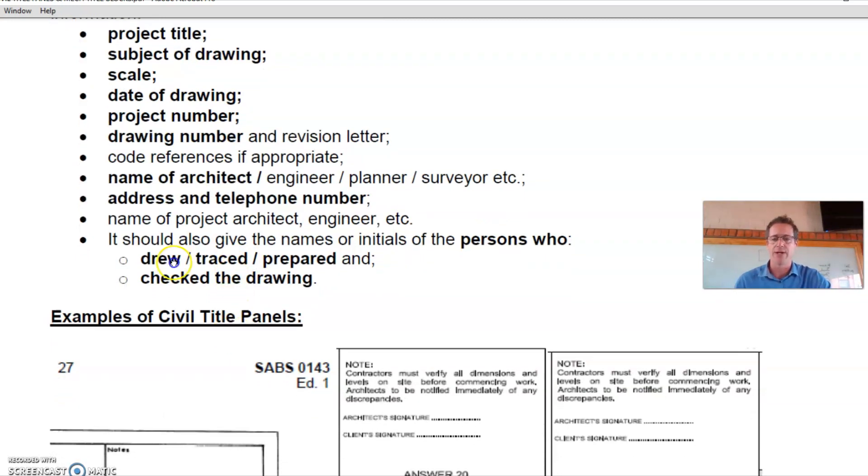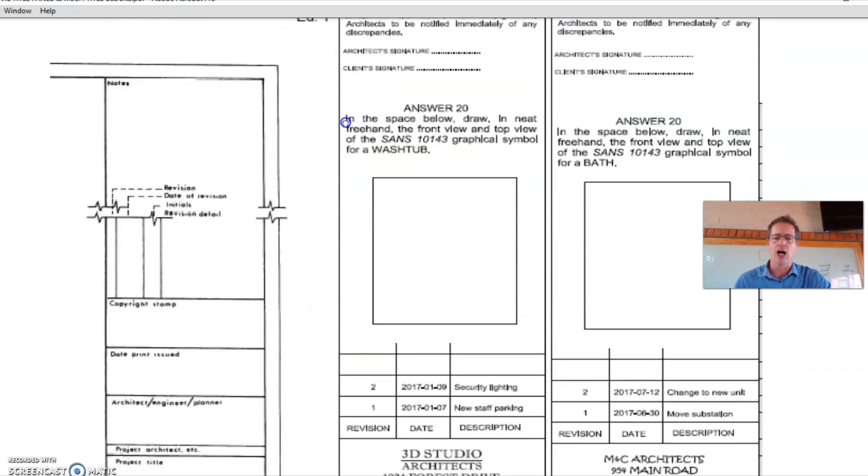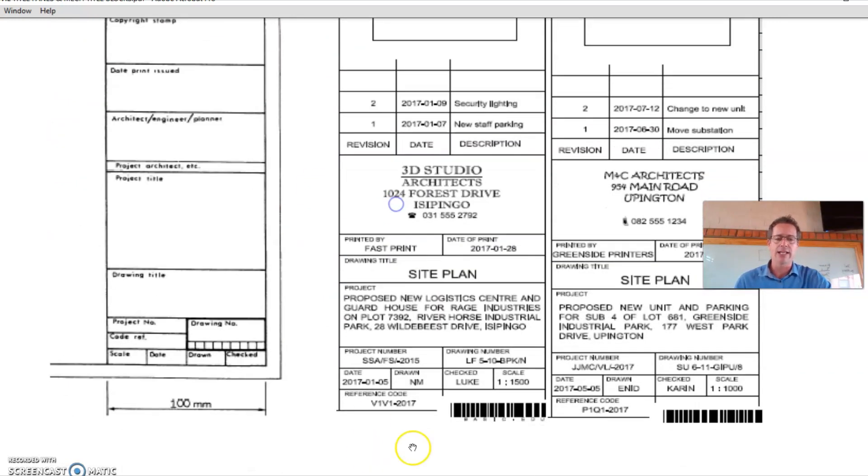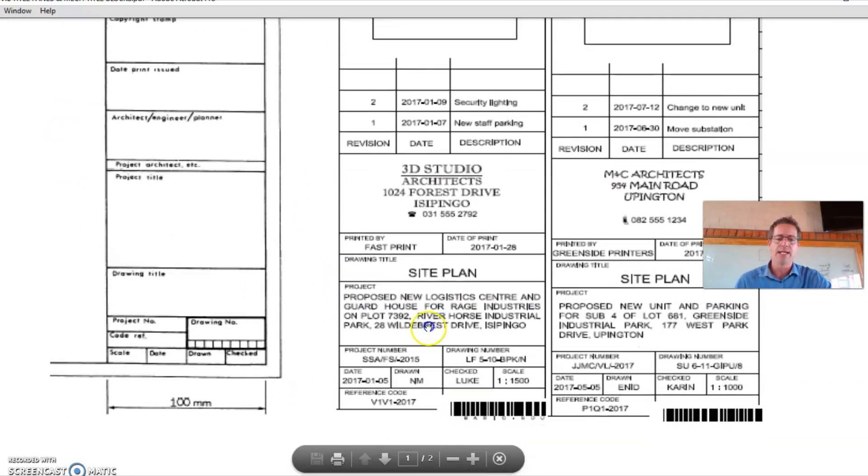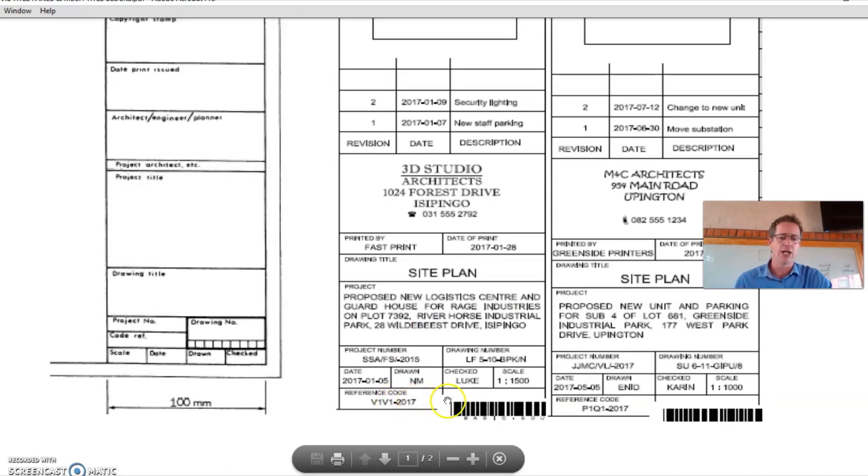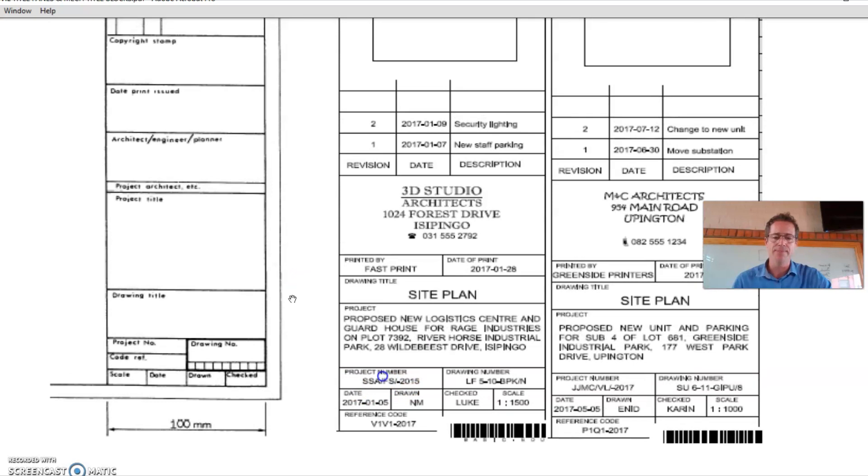Here are some examples of civil title panels. Let's just look at this one here in the middle, which is the clearest for us. There's a reference code at the bottom, the date, drawn by initials, who checked it, and the scale used. Then the drawing number—remember these things are more used in corporate architect firms, you can come up with fictitious ones for information that you aren't sure of.